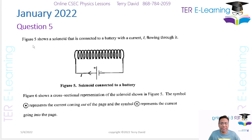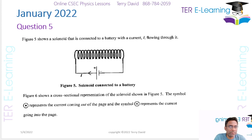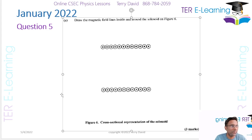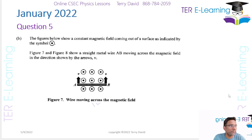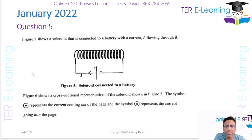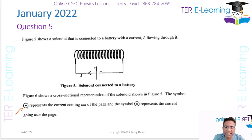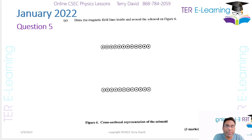So question five — we have a solenoid, which is essentially a coil of wire, and we have a current I flowing through this coil. Figure six shows a cross-section representation of the solenoid and they give us two symbols: one represents the current coming out of the page and the other represents the current going into the page. Those are the typical symbols we use. They want us to draw the magnetic field lines inside and around the solenoid.